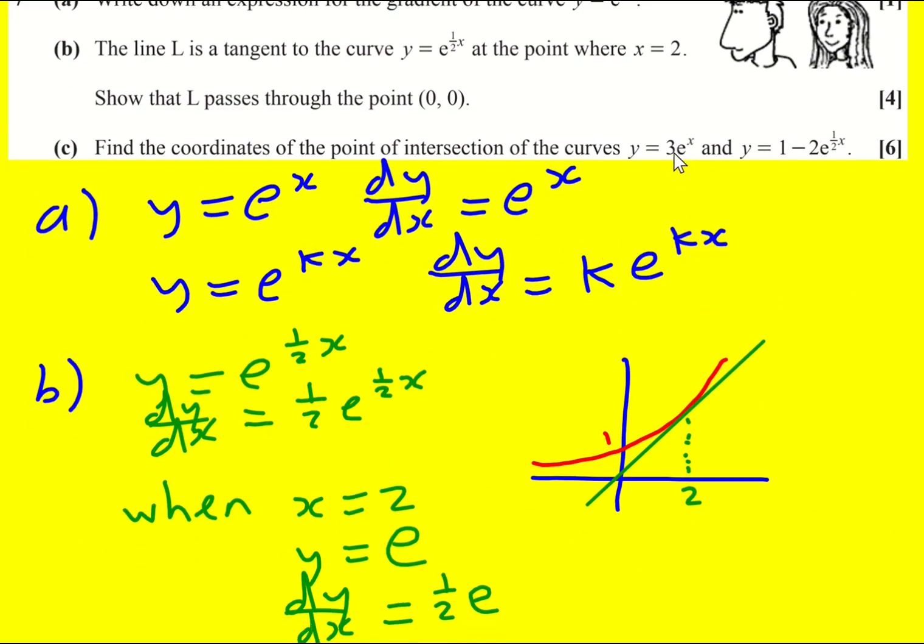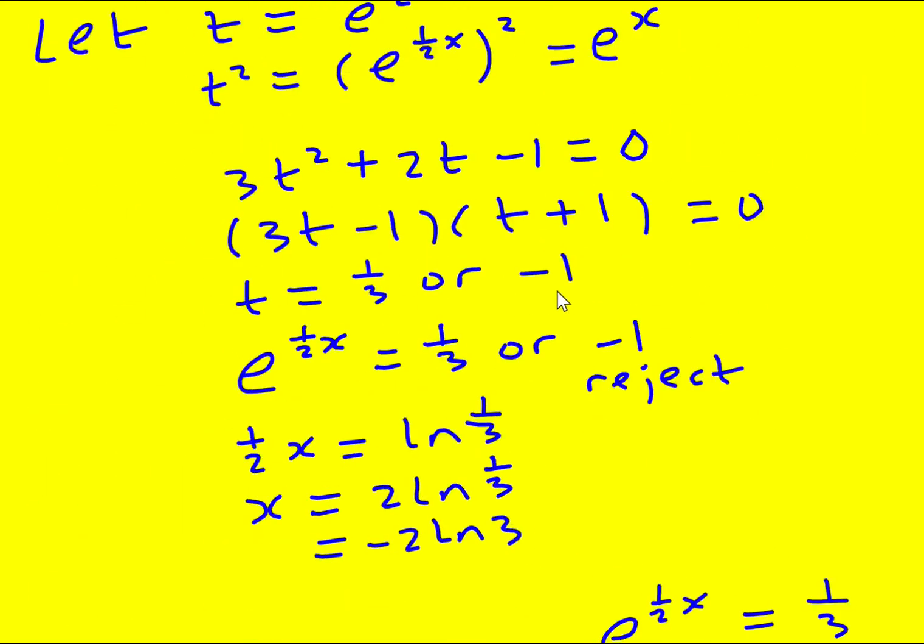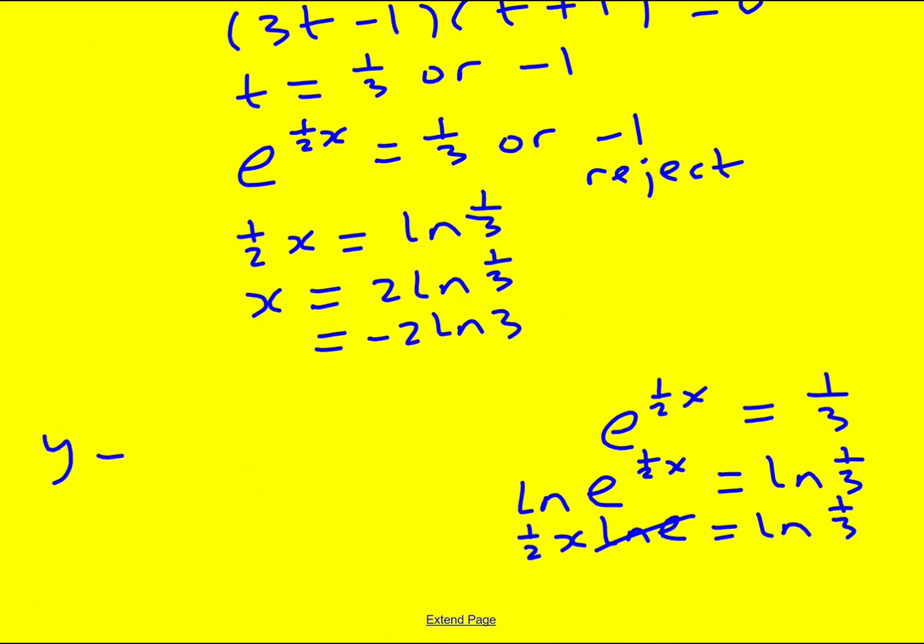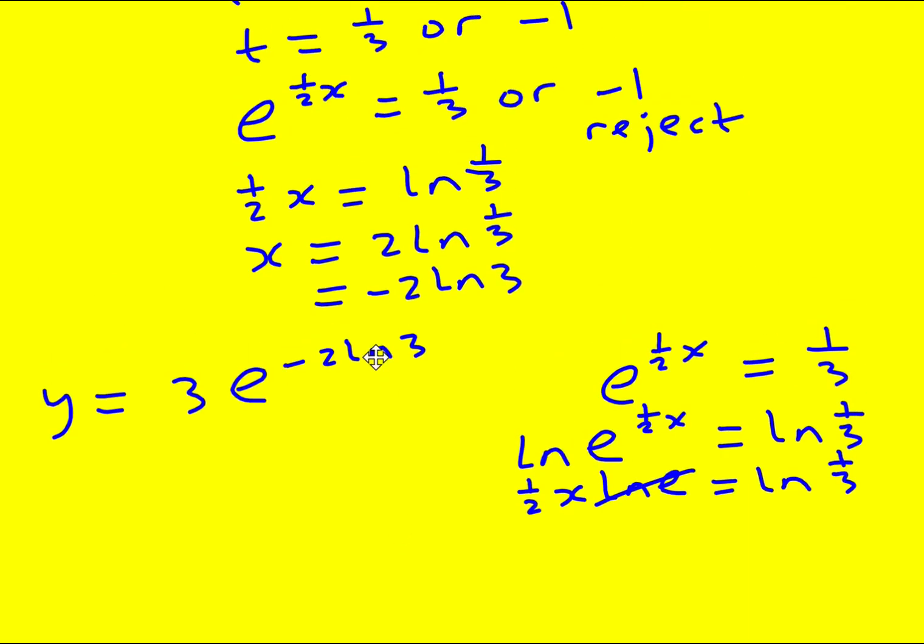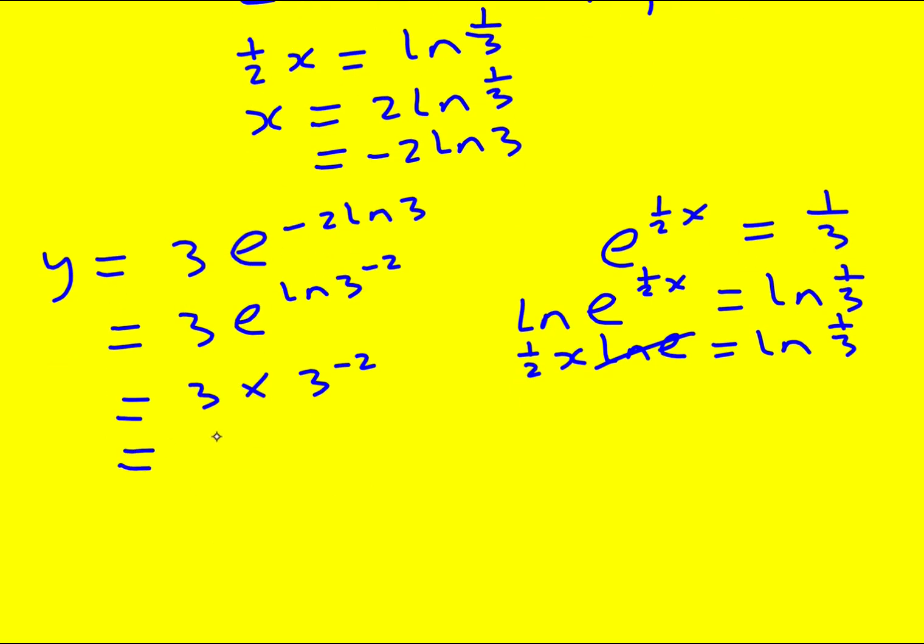Then y equals three e to the x. That's probably going to be the easiest one to substitute into. When x is this, y is three e to the minus two ln three. Let's stick with this route. It's going to be three e to the ln three all to the power of minus two. This becomes three times three to the minus two, because e to the power of ln cancels out since they're inverse operations. Then this becomes three times one over three squared, which is one over nine, and I get one third.